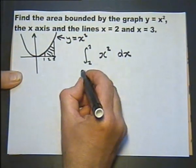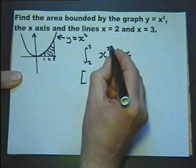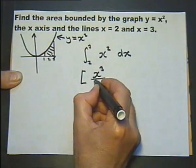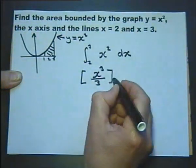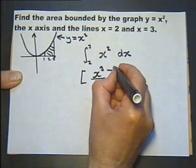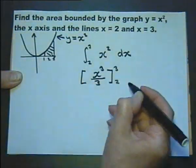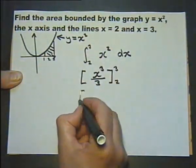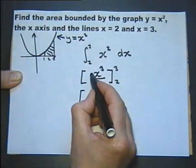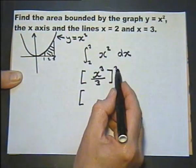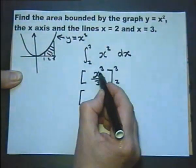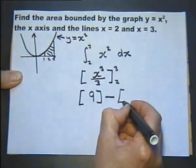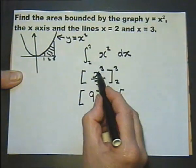So let's do the integration. We raise this by one power so it becomes a 3 and we divide by that new power. Putting this in squared brackets is a normal process, upper limit and lower limit. So now we substitute in the upper limit as a value of x. Substituting in there we get 3 cubed is 27 divided by 3, that's in fact 9, minus substituting in the lower limit.